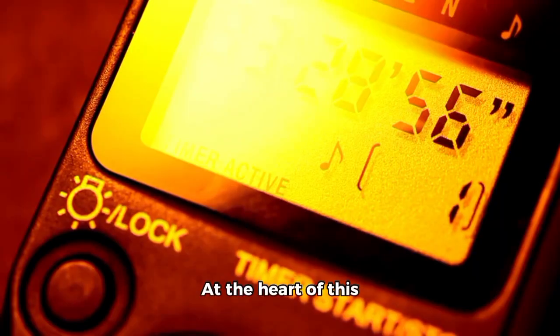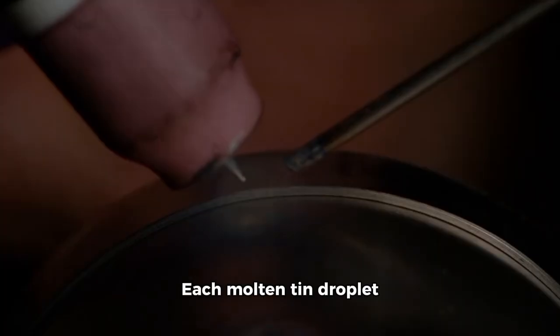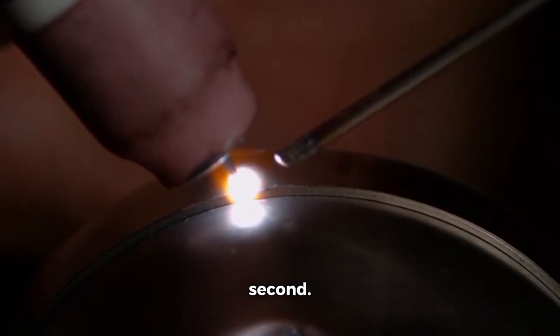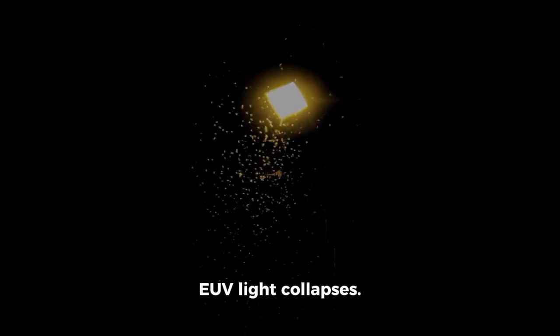At the heart of this system is timing. Each molten tin droplet must be hit by lasers at exactly the right moment thousands of times per second. Missed by a fraction, and the UV light collapses.